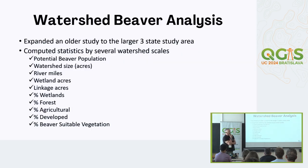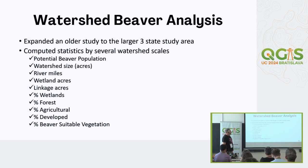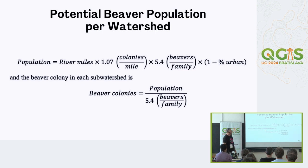Another part of this: the Superior Bioconservancy had a student intern who had aggregated beaver statistics by watershed for a small area, so I repeated that for the watersheds across the entire study area. Beaver are a keystone species very important to a functional ecosystem. I generated statistics by watershed including a potential beaver population metric - a fairly simple algorithm based on river miles and land use, subtracting urban areas. It's been documented as a sound measure of potential beaver habitat.